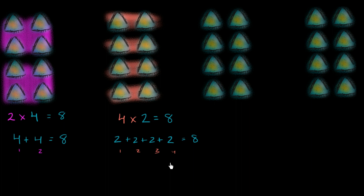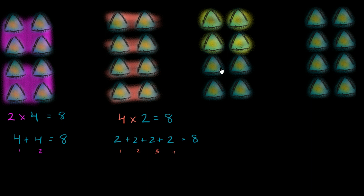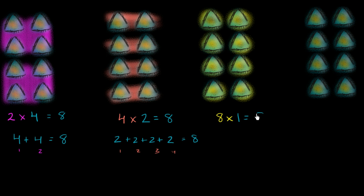How else could we represent eight? Well, we literally could view it as eight groups of one. So eight groups of one would look like this — that's one group of one, two, three, four, five, six, seven, eight. So we could write this down as eight times one. Eight times one is equal to eight. And if we wanted to write this down as repeated addition, this is literally eight ones.